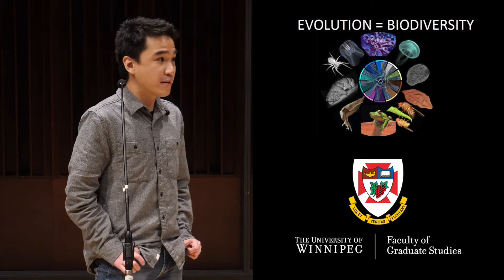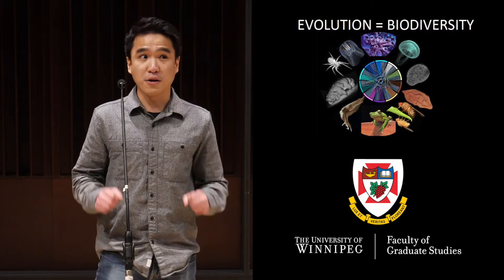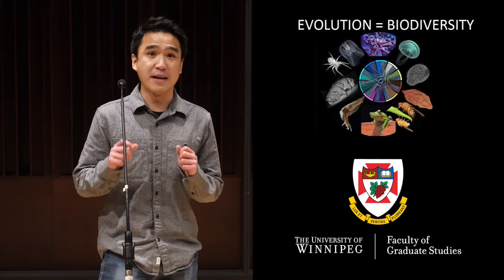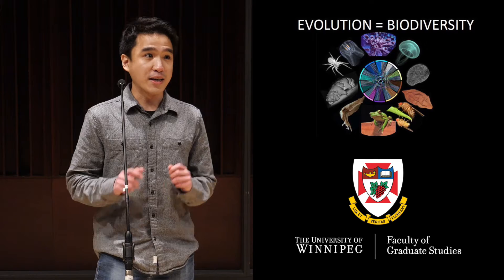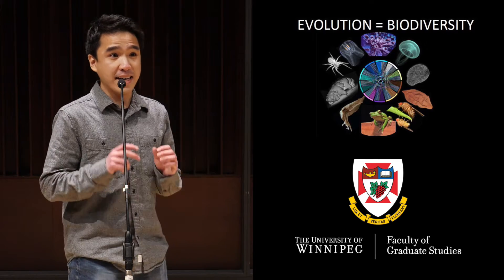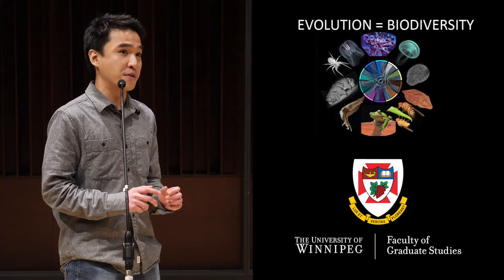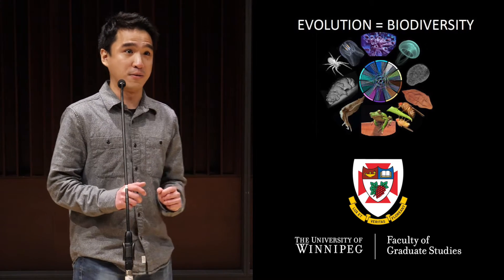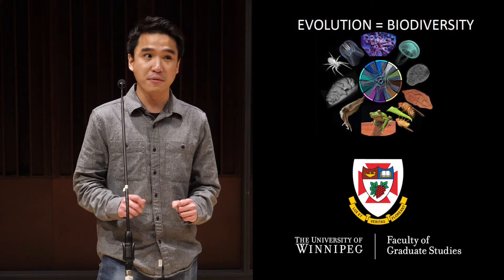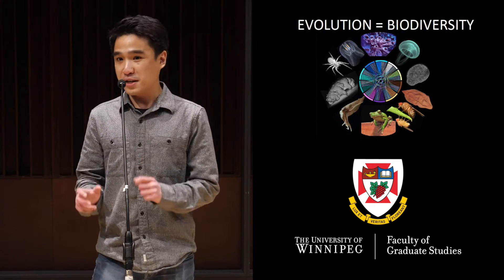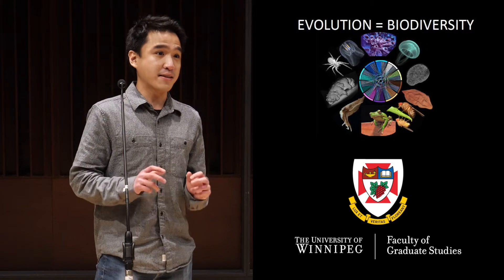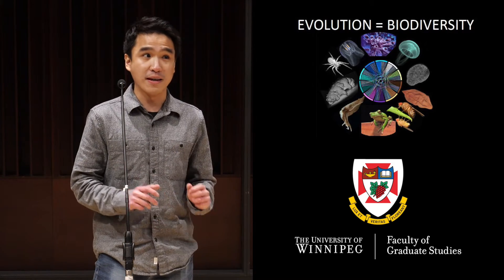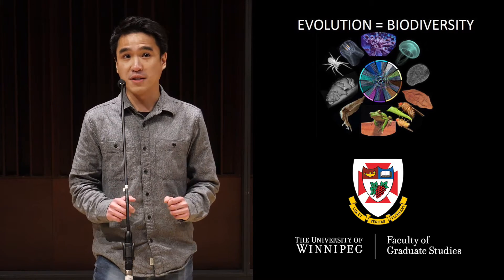And to explain his theory, Darwin used the now famous finches. He noticed that as these finches adapted to their new environments, their beak shapes changed. And it's these adaptations that lead to new species.